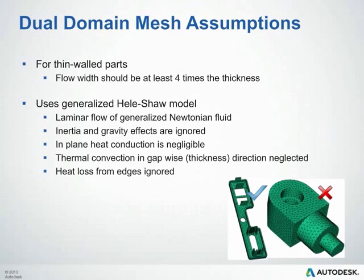The dual domain mesh type has a few assumptions we need to be aware of. It is designed primarily for thin-walled parts. Nine times out of ten, you'll be able to look at the part and see — for example, the large chunky model in the lower right is clearly not a thin-walled part, while the snap cover on the left clearly is. As a rough guideline, the flow width should be at least four times the thickness — ten times is even better. We use the Hele-Shaw model here, which assumes laminar flow of a generalized Newtonian fluid. Inertia and gravity effects are ignored, which is not a problem for thin-walled parts, but could be an issue if you're trying to simulate jetting in thick-walled parts.